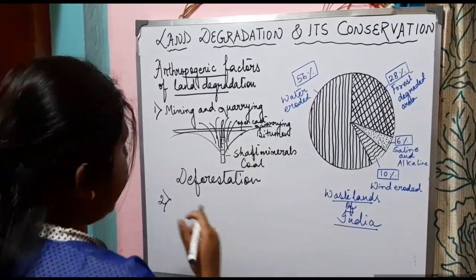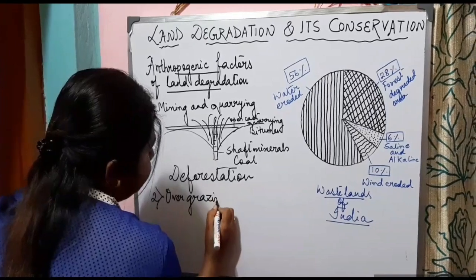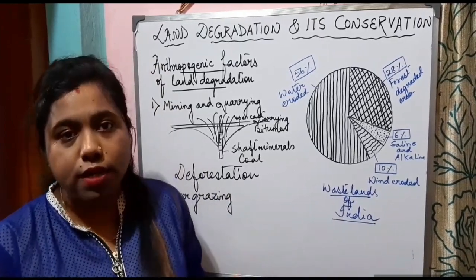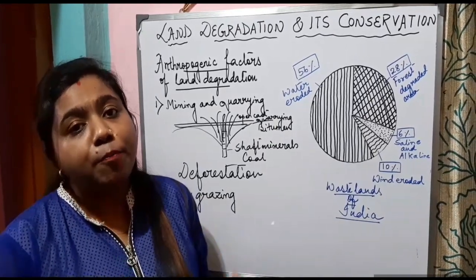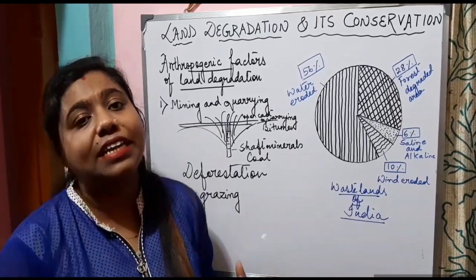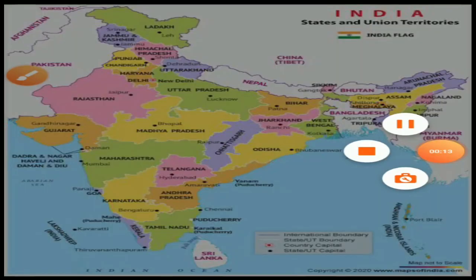The second human factor which causes land degradation is over grazing, meaning excessive grazing by livestock. We know that rearing of livestock and fodder production is an important economic activity. Excessive grazing of livestock leads to land degradation. States of Gujarat, Rajasthan, Maharashtra, Madhya Pradesh, and the hilly states of northern India suffer land degradation due to over grazing.